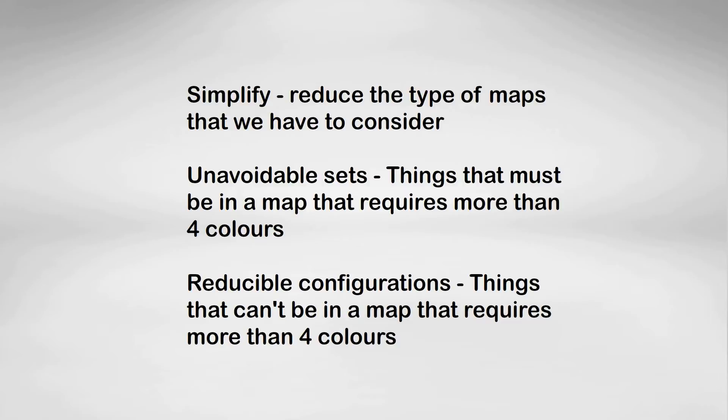I'm going to do this in three parts. Firstly, I'm going to simplify — reduce the type of maps we have to consider. Secondly, I'm going to focus on one of the really major concepts: unavoidable sets. These are things that must be in a map that requires more than four colours, so if there is a counterexample to the Four Colour Map Theorem, unavoidable sets tells us what must be in it. And then we'll talk about reducible configurations — things that can't be in a map that requires more colours.